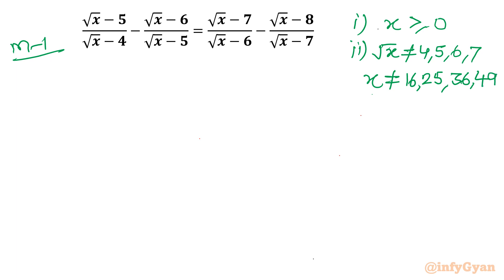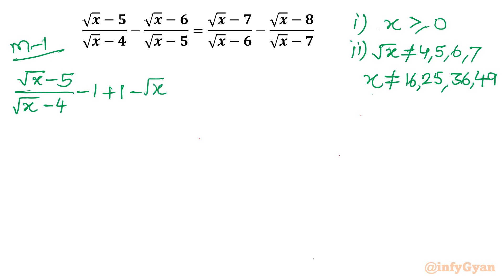Now I will use algebraic manipulation — that is method number one. I will add 1 and subtract 1. You can begin with substitution itself also. For the minus 4 term I will write minus 1, so I need to write plus 1 also on the left hand side. We have (√x − 6) over (√x − 5) in the bracket.